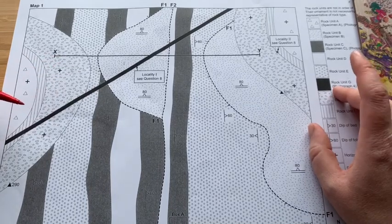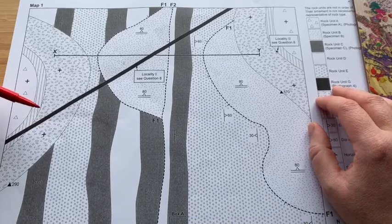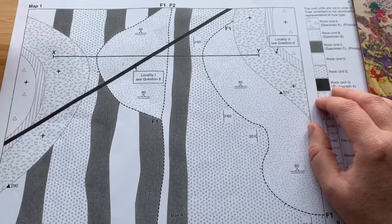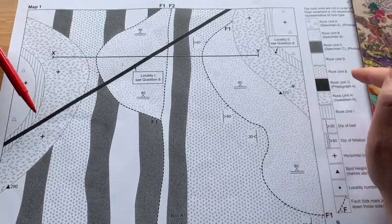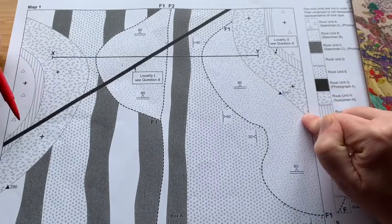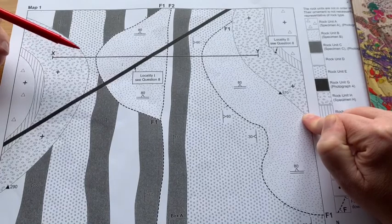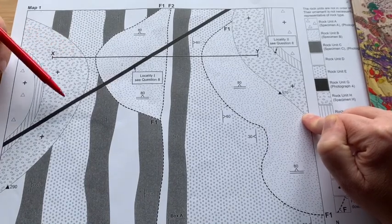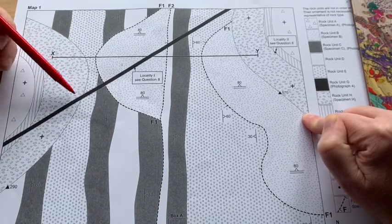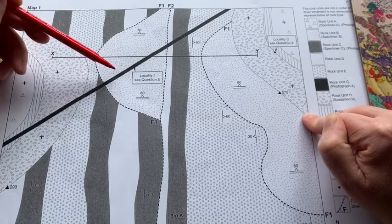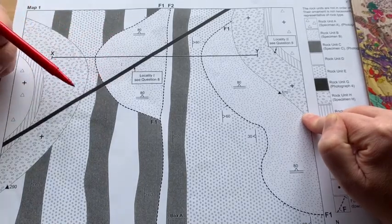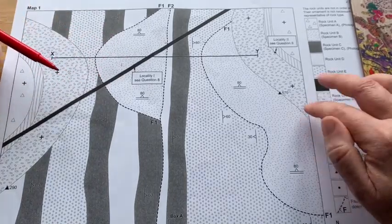So the first step is to interpret the different outcrop patterns and what does that mean? Well, if we look at the map, one of the first things which stands out is this diagonal line that's cutting across every single feature. It's got a sheet-like morphology. This looks like it's a dike and because it's a straight line, it's going to be vertical.